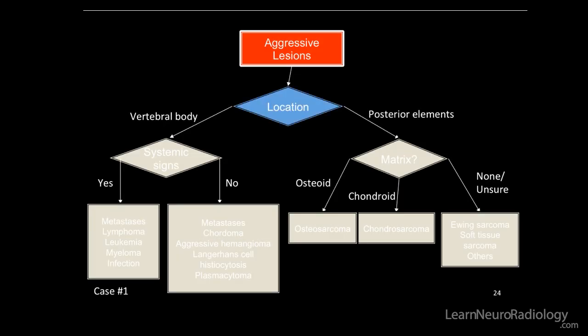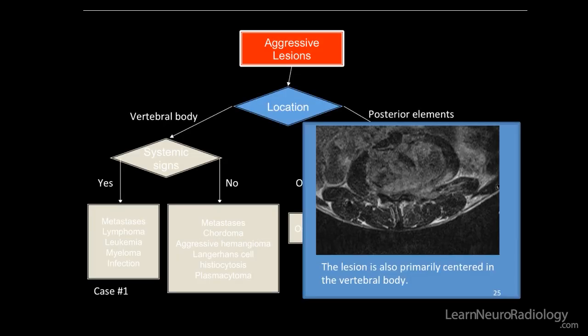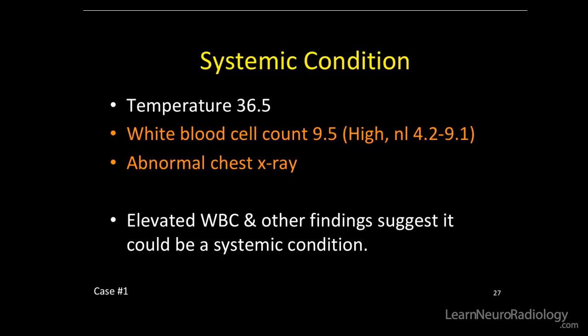The lesion is primarily centered in the vertebral body. Does the patient have any systemic signs? Looking at the chart, their temperature was okay, but they do have a high white blood cell count and an abnormal chest x-ray. Maybe this is a systemic condition.